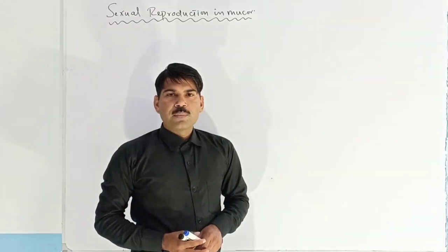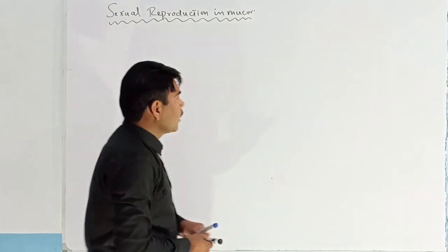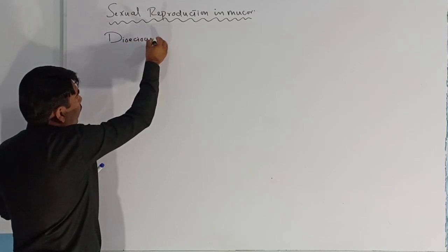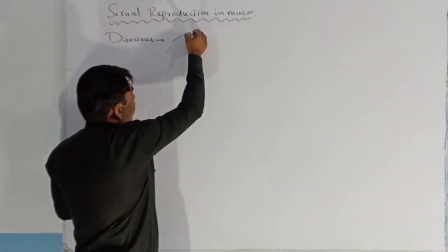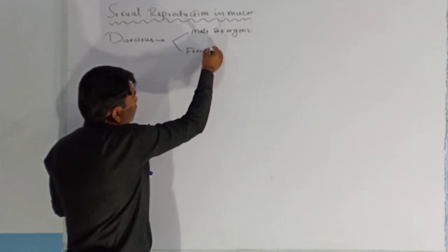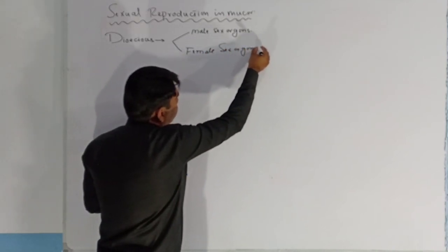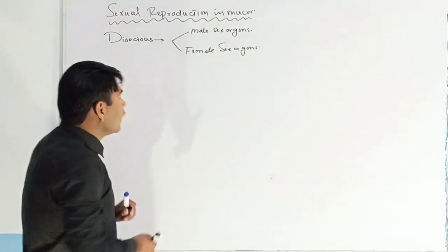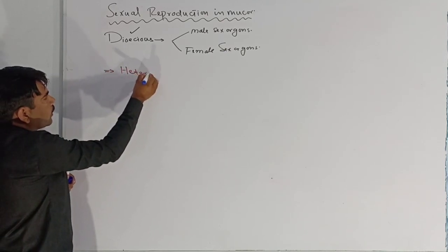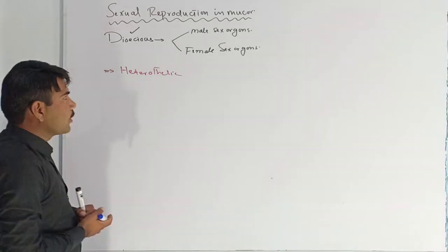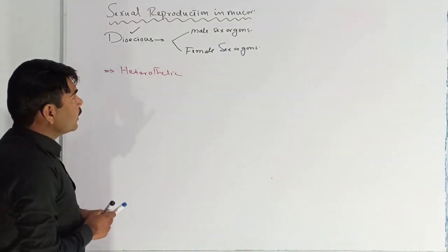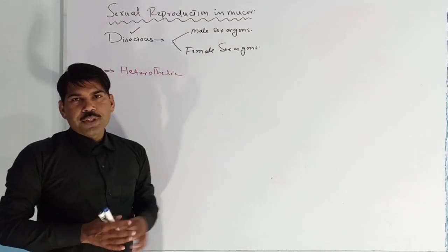Today we are going to discuss sexual reproduction in Mucor. It is dioecious — if male sex organs and female sex organs are present on different fungal bodies, then it is known as dioecious. It is also known as heterothallic, which means both types of gametes are produced on different bodies of the fungus or Mucor.